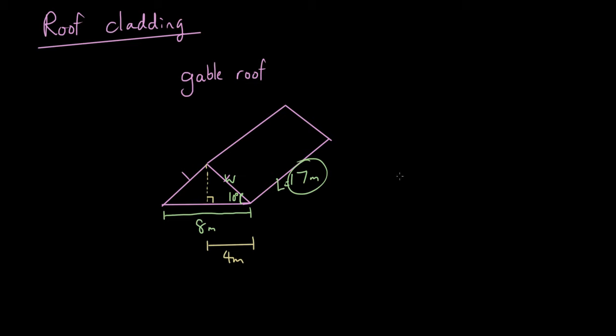So to find w, we're going to look at this right angle triangle. This right angle triangle just comes from here - I'm just drawing it in isolation. So I have 10 degrees, I have 4 meters, and I want to find w.